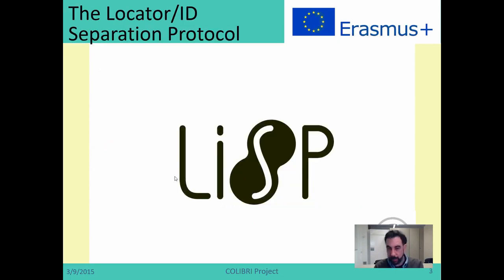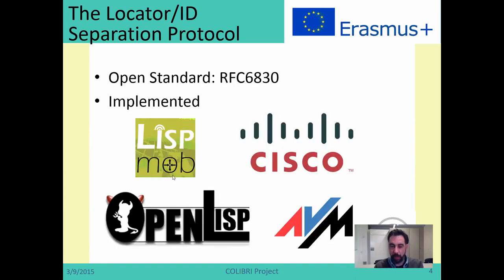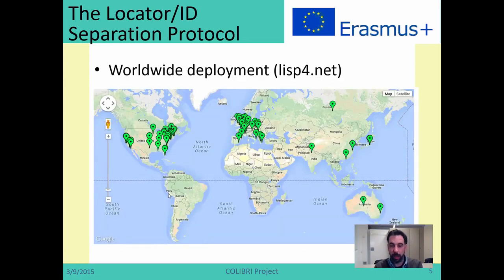In this lesson, I'm going to explain very briefly how LISP works, leaving some details for you to look into the slides or the suggested documents. LISP is an open standard published by the IETF, and many people have implemented it: LispMob, an open-source Linux implementation; Cisco on its equipment; OpenLisp, a FreeBSD implementation; and AUVM, a German company building home routers with LISP support. LISP is widely deployed, with an experimental network worldwide and many companies and academic institutions involved. LISP is not just an architecture — it's a reality.